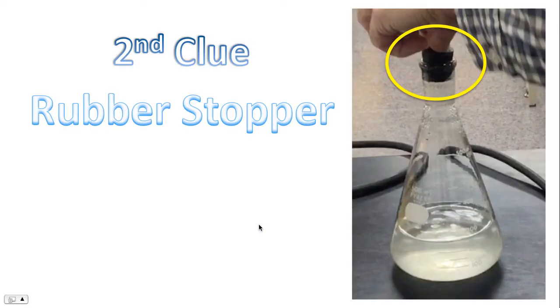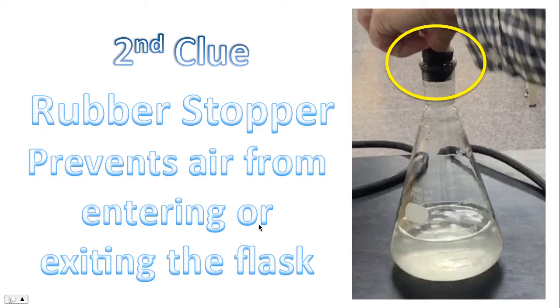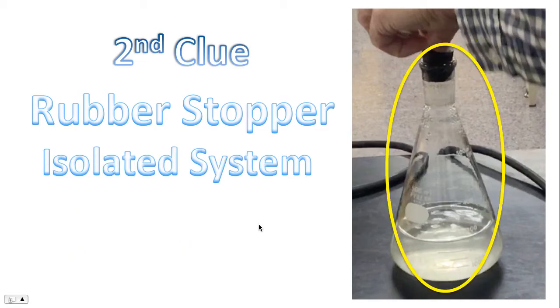Here's the second clue, the rubber stopper. The rubber stopper's function is to seal the flask. It prevents air from entering or exiting the flask. In effect, we've created what's known in science as an isolated system.